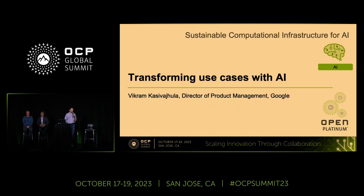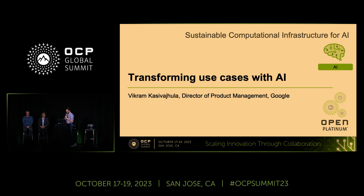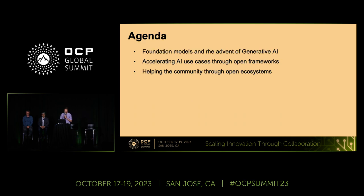My name is Vikram. I'm a director for product management at Google, where I focus on machine learning efficiency and ways to scale. A few things I want to chat about today: generally about how AI is helping transform our use cases, from foundation models to open frameworks and open ecosystems.